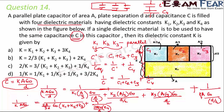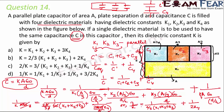Cancelling ε₀, A, and d from both sides, we get 1/k = (3/2)·1/(k1+k2+k3) + 1/(2k4). Multiplying both sides by 2: 2/k = 3/(k1+k2+k3) + 1/k4. This is the correct expression for the equivalent dielectric constant k.